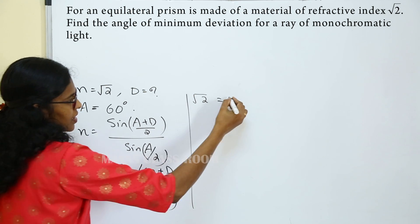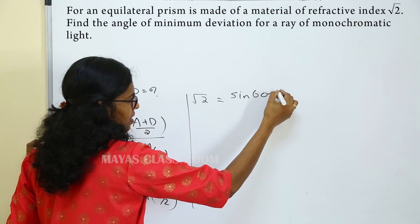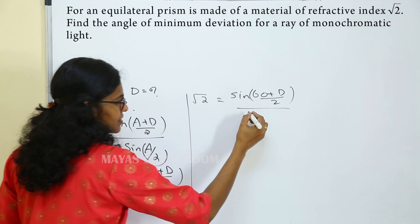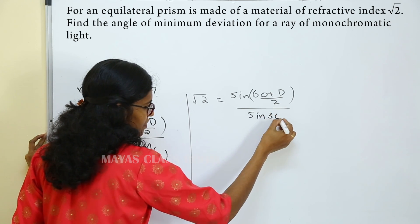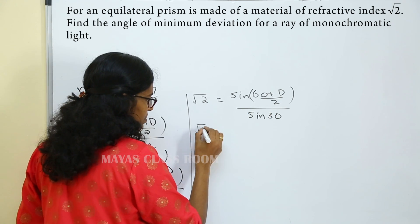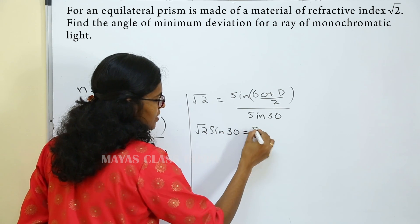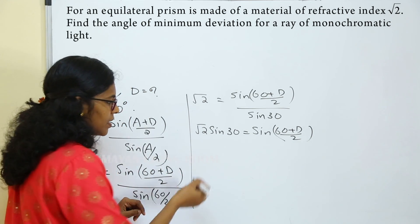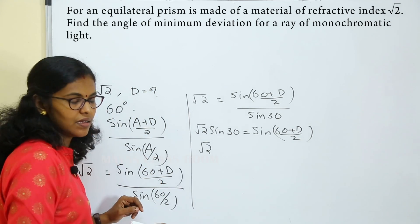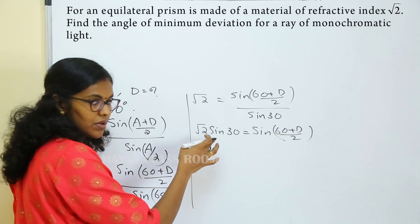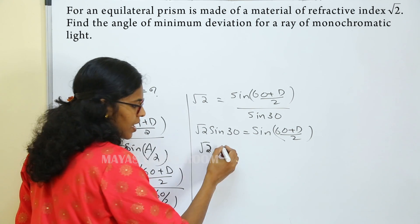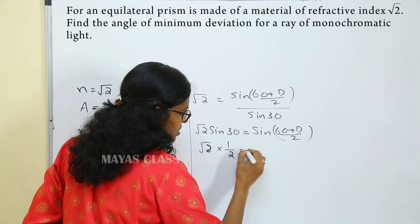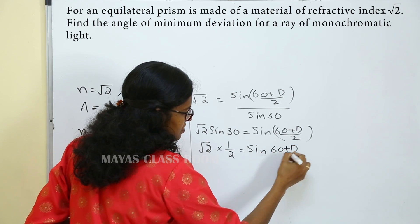Substituting values: root 2 is equal to sin(60 plus D) divided by 2, divided by sin 30. Cross multiplying: root 2 into sin 30 equals sin(60 plus D) divided by 2. That is root 2 into 1 by 2 is equal to sin(60 plus D) by 2.